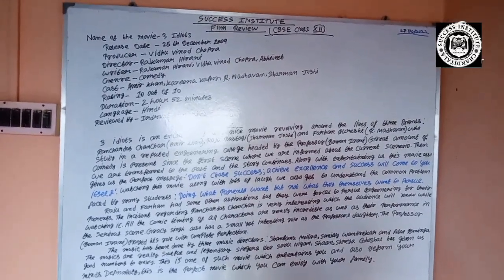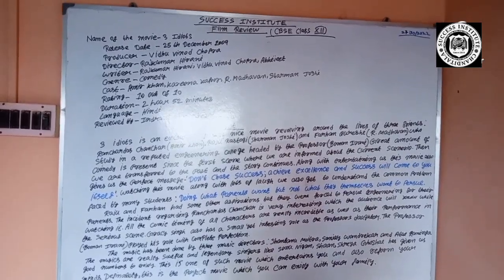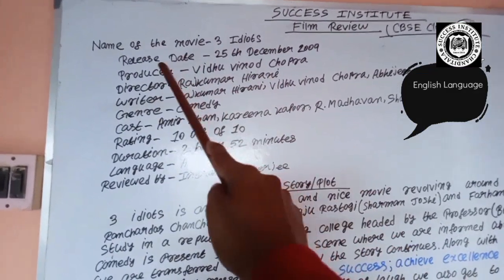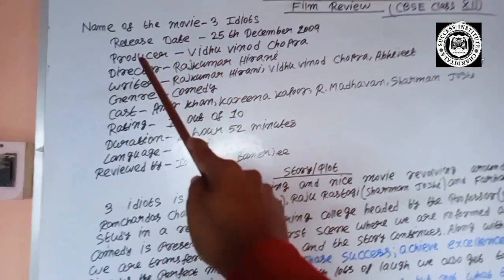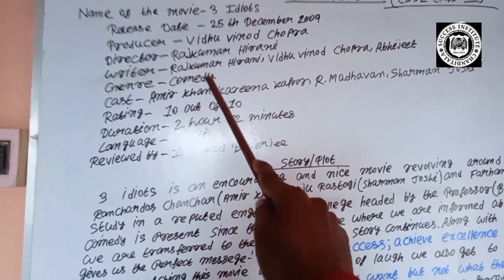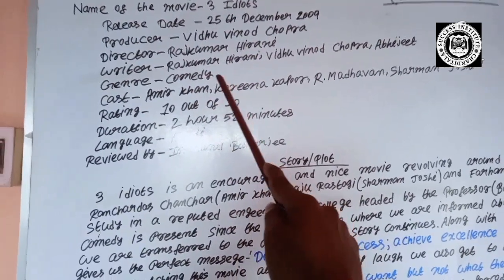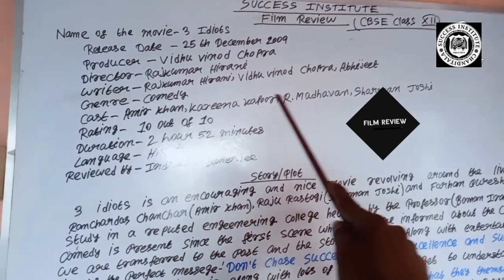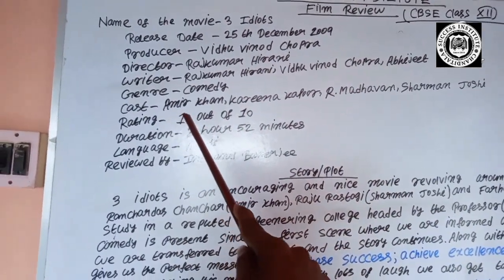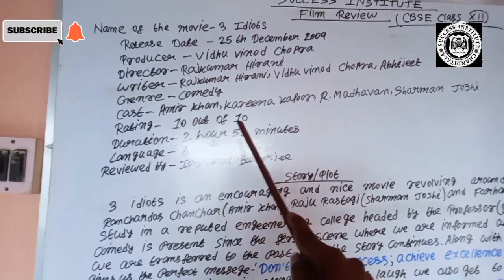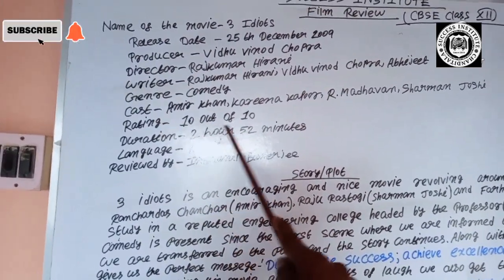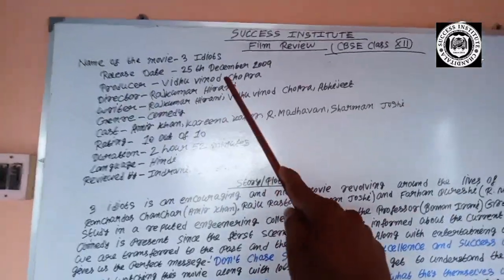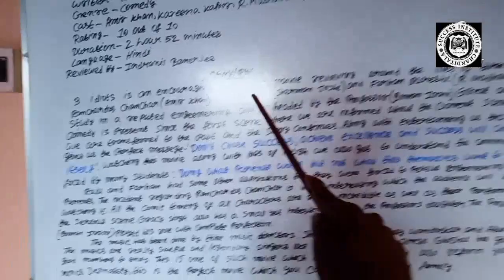This is the format of a movie review for CVC Class 12. First, we have to write some information like the name of the movie, release date, producer name, director name, writer name, genre — meaning what kind of movie it is, such as comedy, horror, or sci-fi — general cast meaning the actor and actress names, rating out of 10, duration, language, and reviewed by, where you write your own name.